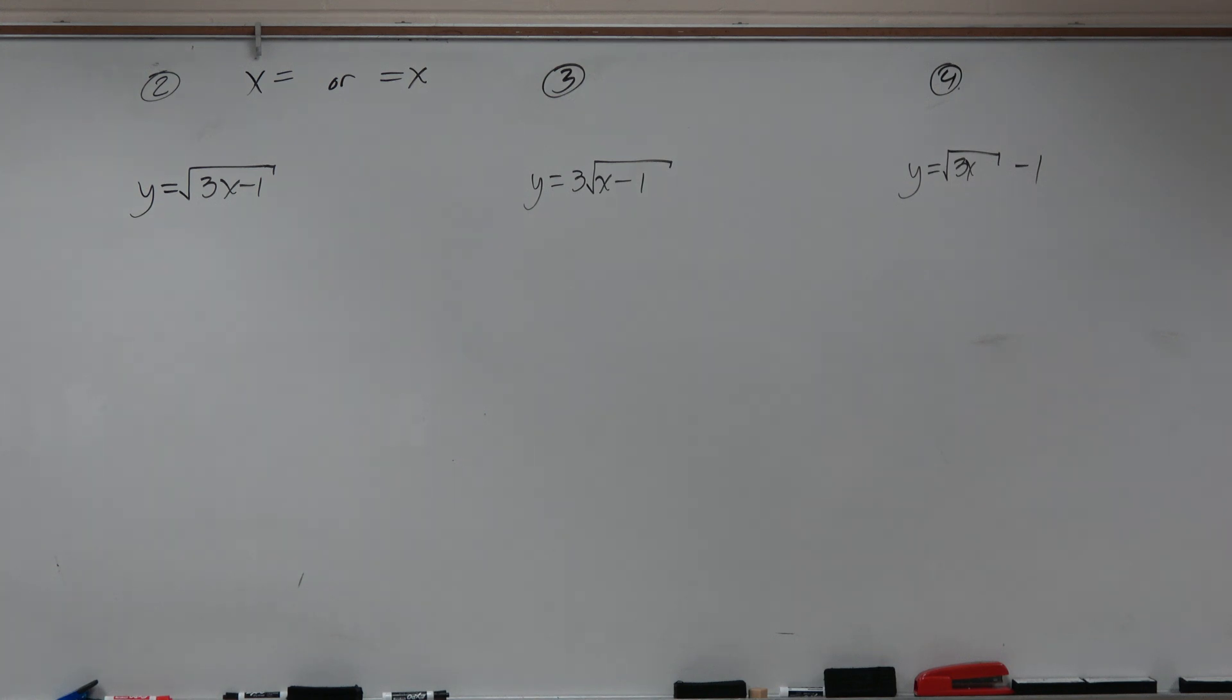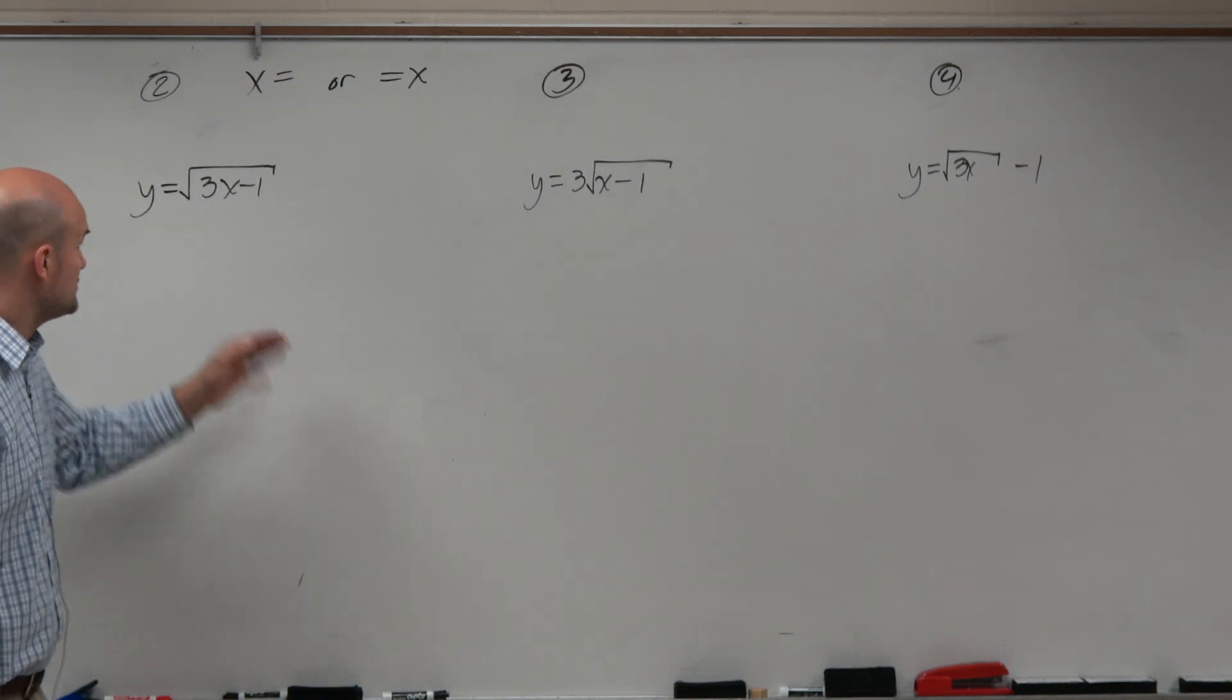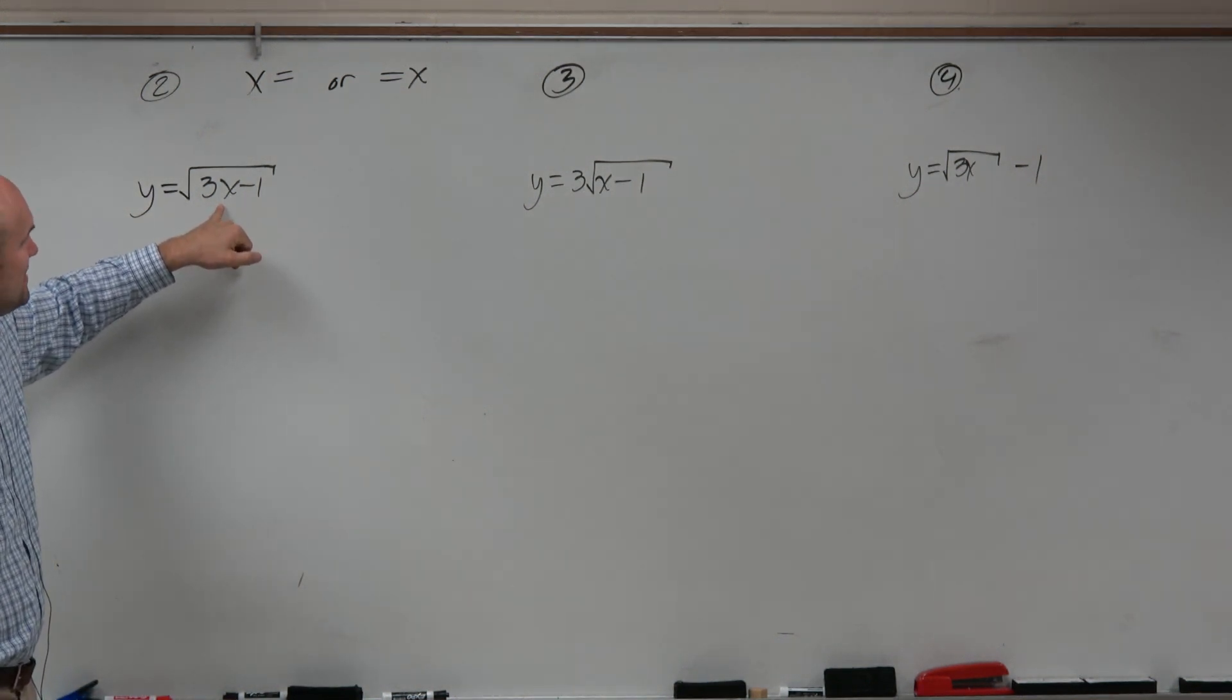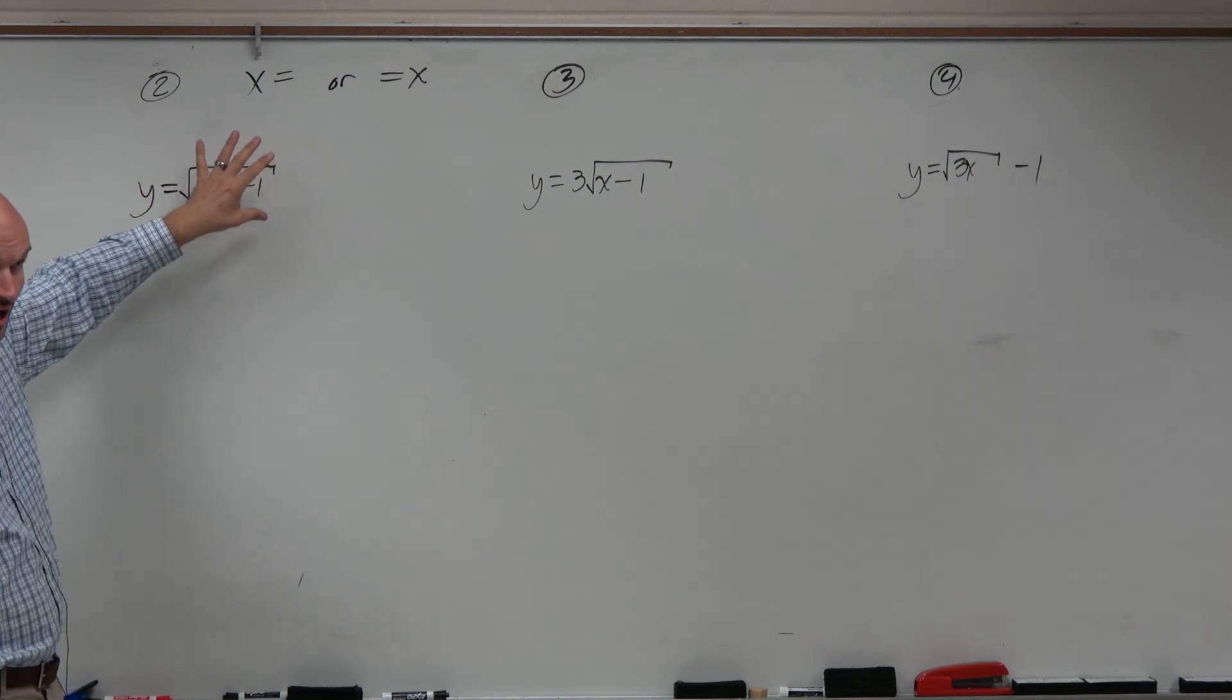Let's go and take a look here. On this example, hopefully you guys recognize it's a lot of the same thing. We're using our inverse operation. We want to isolate the x, get x by itself. The problem is x is being multiplied by 3, it's being subtracted by 1, and then you're taking the square root under that.